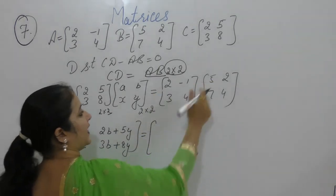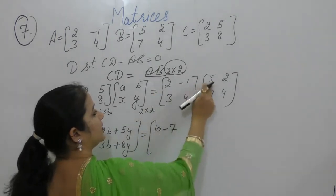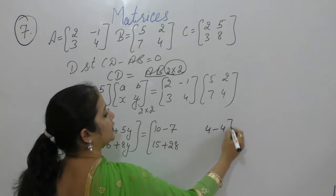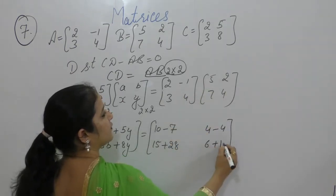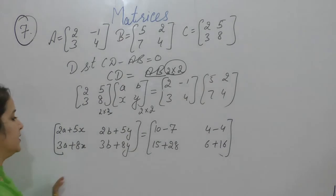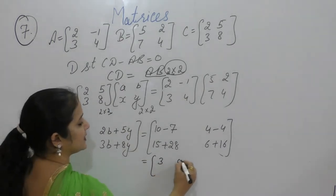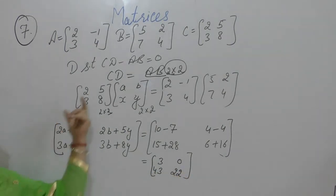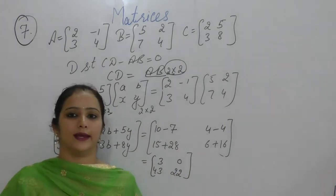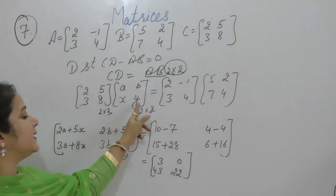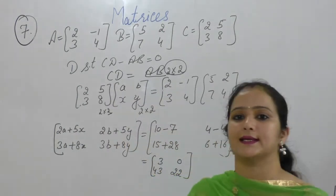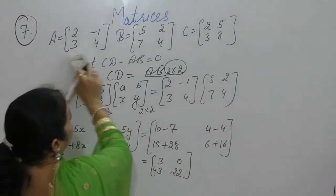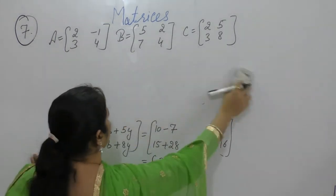Now compute AB: 2×5 + (-1)×7 = 10 - 7 = 3, then 2×2 + (-1)×4 = 0, then 3×5 + 4×7 = 43, then 3×2 + 4×4 = 22. So AB = [[3, 0], [43, 22]]. Setting CD equal to AB, two matrices are equal if their corresponding elements are equal, so equate corresponding elements.